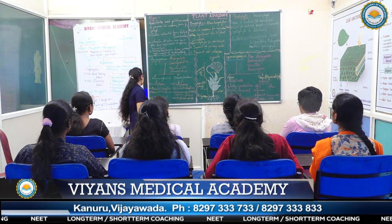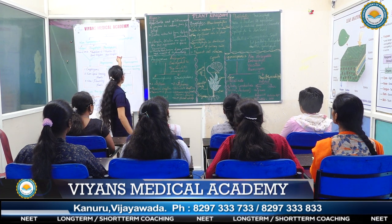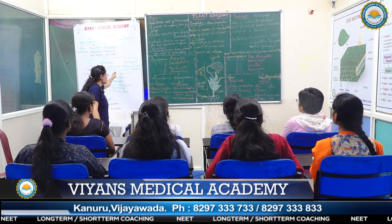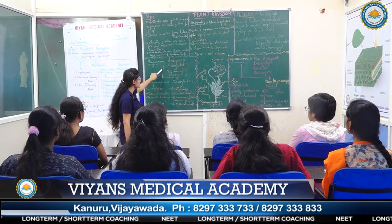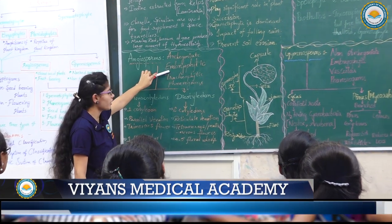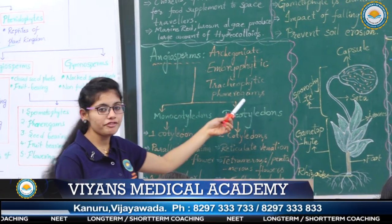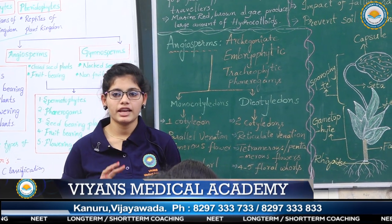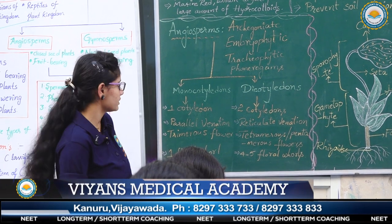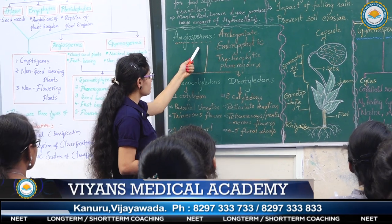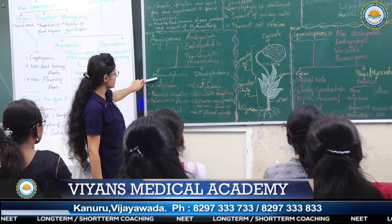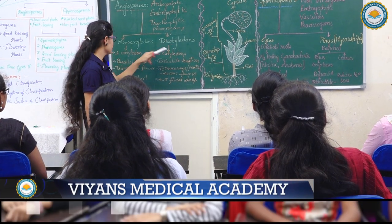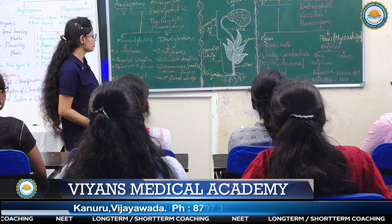Now let us know the subdivision spermatophyte, which includes angiosperms and gymnosperms. Angiosperms are archegonate, embryophytic, tracheophyte, and phanerogams. Phanerogams means seed-bearing plants, fruit-bearing plants, and flowering plants. Angiosperms are divided into two divisions: monocotyledons and dicotyledons.